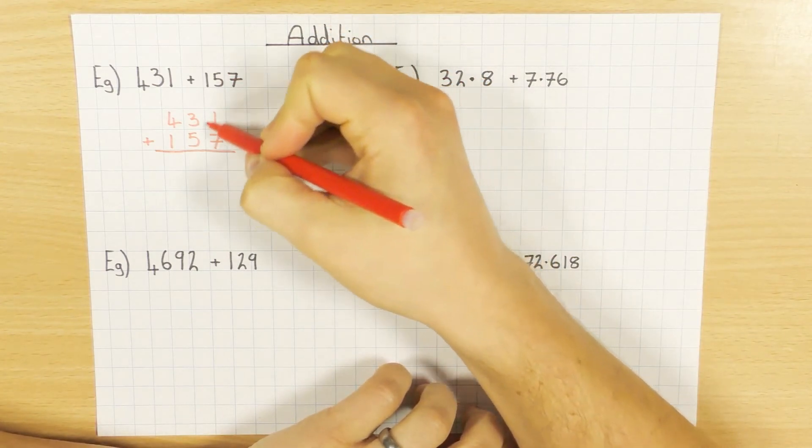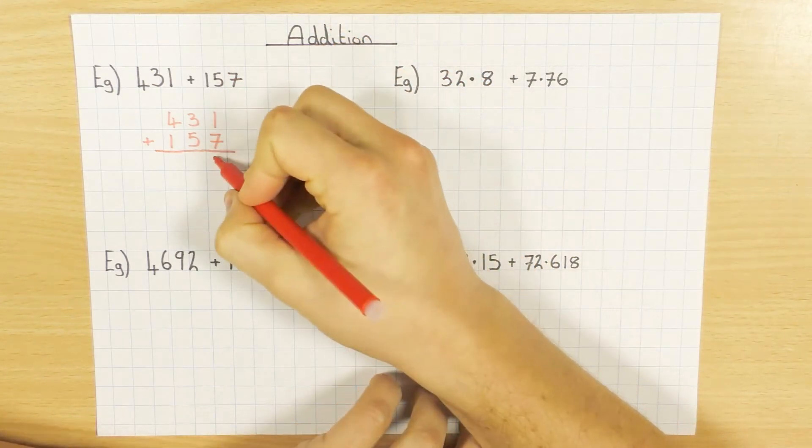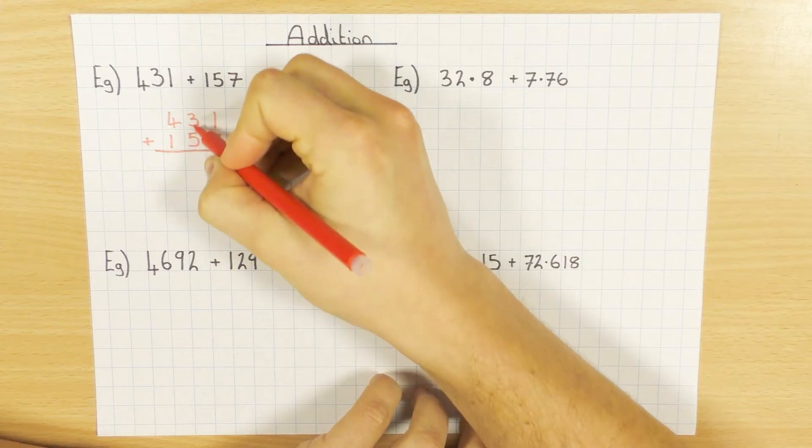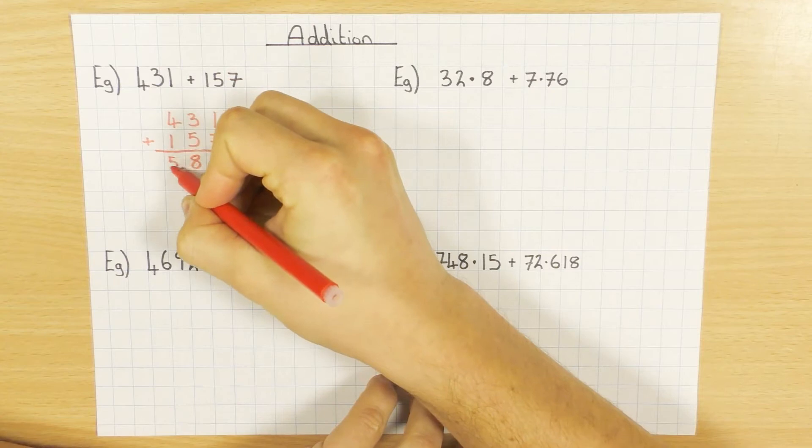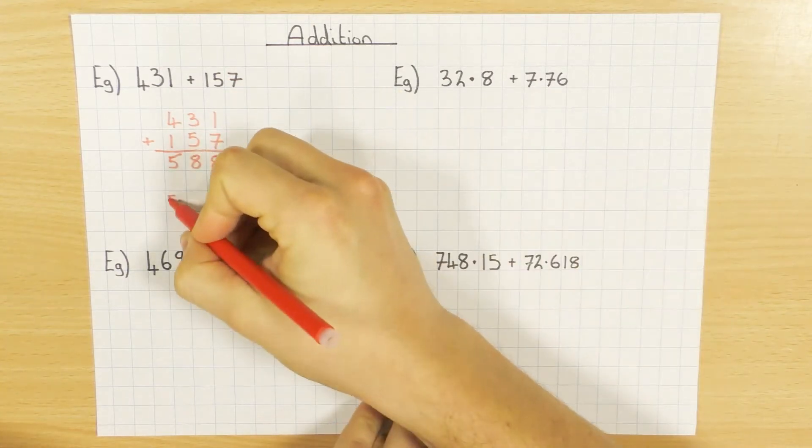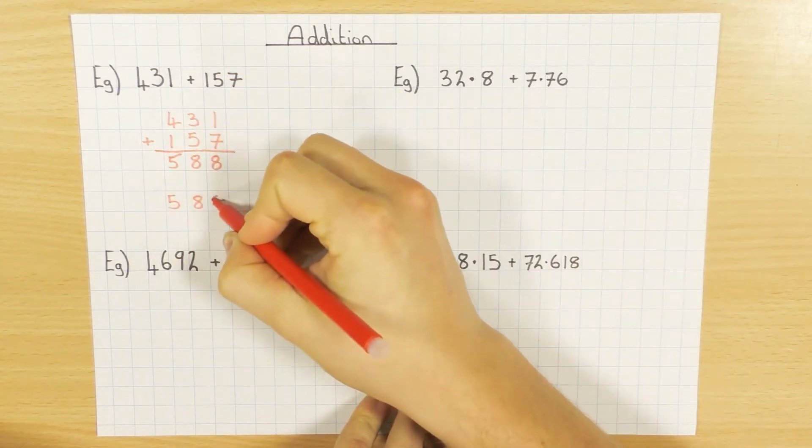Remember we always start from the right hand side. So 1 add 7 is 8. 3 add 5 is 8. 4 add 1 is 5. So our answer is 588.